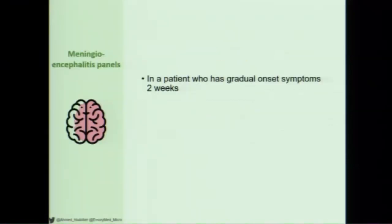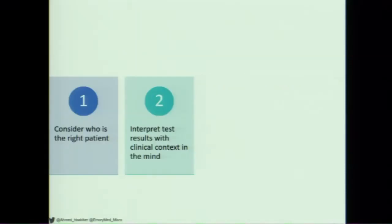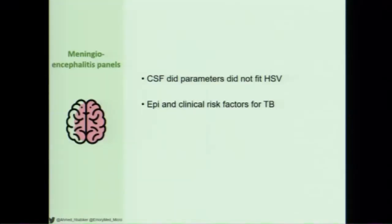If you have an inpatient on broad spectrum antibiotics who develops acute onset diarrhea, is your multiplex panel really the right test? Do you really need to be thinking about cryptosporidium and norovirus, or is targeted C. diff PCR testing the way to go? Coming back to our initial patient with a two-week history of gradual onset symptoms: was the meningoencephalitis panel really the right test? Probably not. All the pathogens on that panel are more acute pathogens and wouldn't be causing a smoldering infection over two weeks.